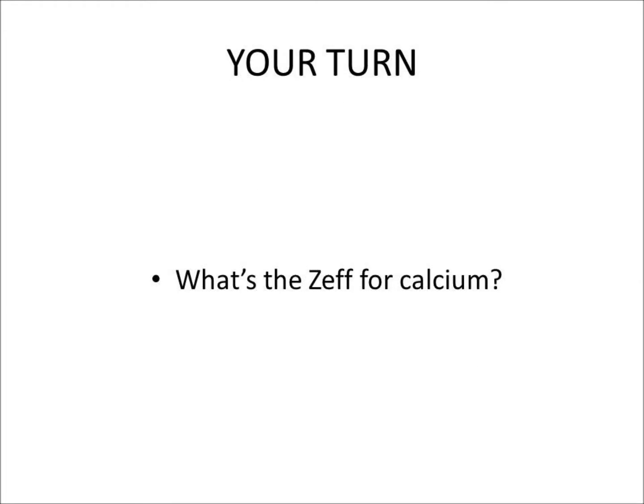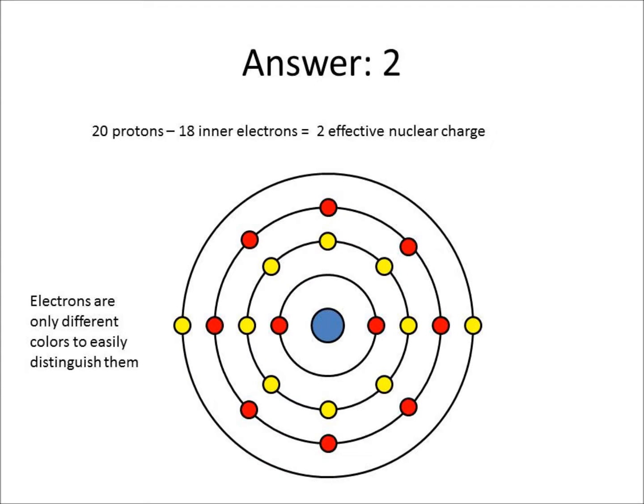Here you can try another example. What is the Z-effective for calcium? The answer is twenty minus eighteen equals two. There is the first orbital with two electrons, the second orbital with eight electrons, and the third orbital also with eight electrons. Therefore, two plus eight plus eight equals eighteen.